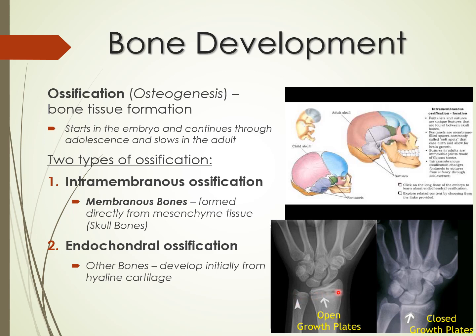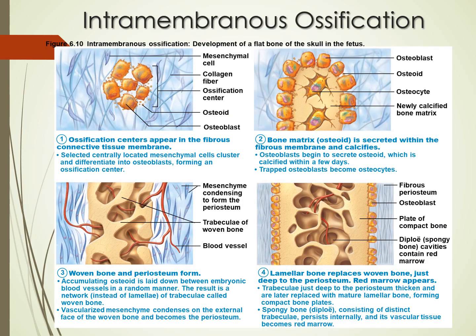Endochondral ossification applies to most bones in the body — the only exceptions are skull bones and clavicles. If you look at 'chondral' in the word, that's cartilage — bones first form as hyaline cartilage, then cartilage is replaced by bone. This is how growth plates develop. On a radiograph of a young person's wrist, growth plates look like fractures because cartilage doesn't show white on x-ray. In an adult wrist, those lines are gone — the growth plates have closed.